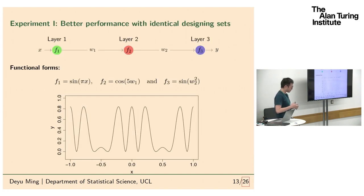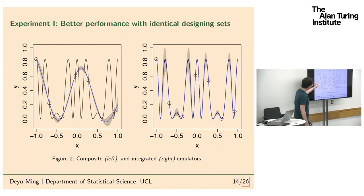Here I do some experiments to demonstrate the performance of the integrated emulator. We have a simple deep structure with three models where I know the true function forms. I choose seven design points. Here is the composite, where you only use global input and output to construct emulators, and here I use exactly the same design points but I emulated three models separately and integrate them together. You can see the mean is fairly well, and the variance is small. So basically it saves you a lot of time on the designing because with identical design sets you actually achieve better performance on the emulation.